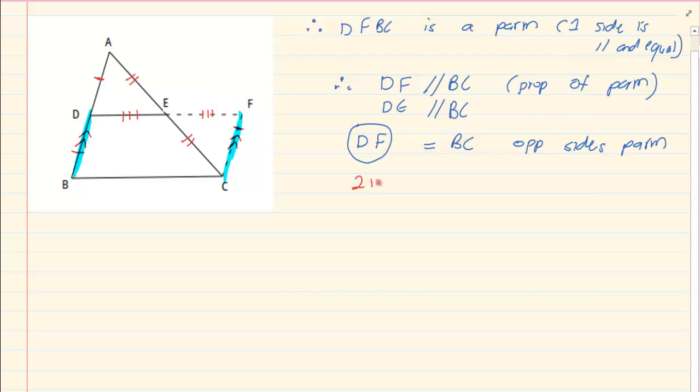But DE and EF make up DF. So 2 times DE make up DF and that is going to equal to BC. Now if you divide by 2, then you have got that DE is equal to half of BC. And that is what you were asked to prove.